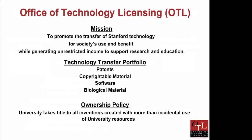The Office of Technology Licensing's mission is to promote the transfer of Stanford technology for society's use and benefit, while generating unrestricted income to support research and education. It's a two-fold mission: we want technologies created at the university to go out and actually benefit people, make products that help people's lives, and at the same time generate income back to the university. This is a cycle — IP is generated, we license it to companies, companies develop products, we receive royalties, and those royalties support further research.